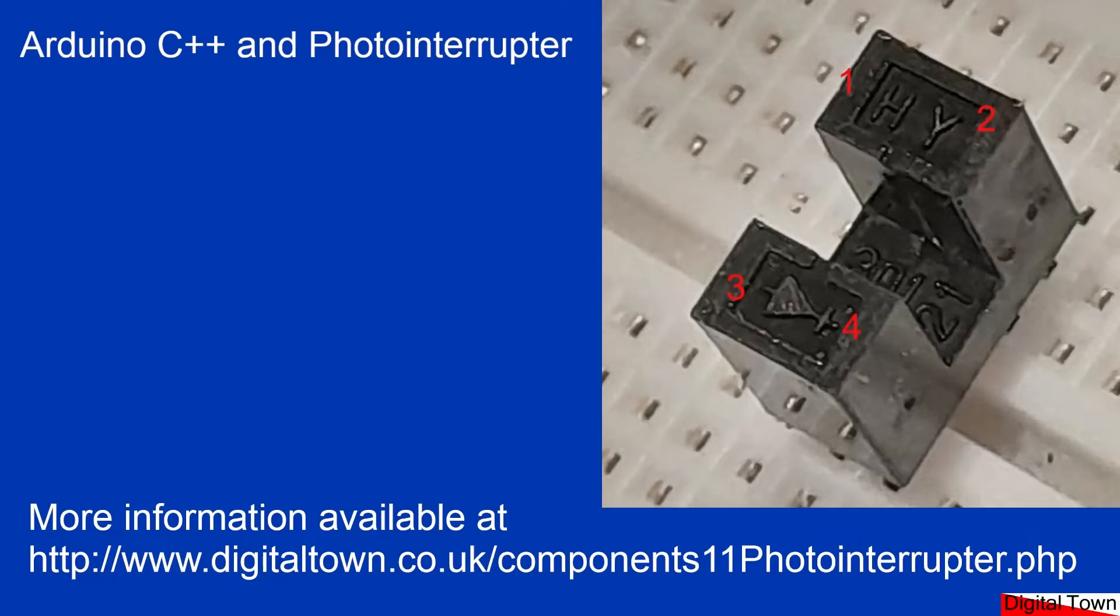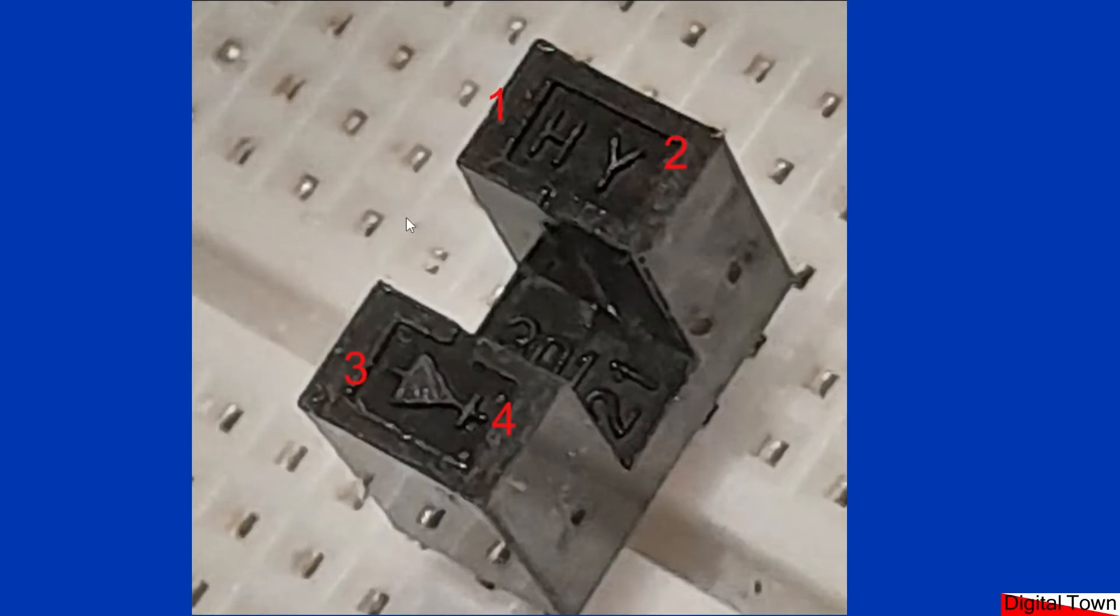To make it easier in the tutorial I've put numbers on. These photo interrupters come in lots of different sizes and shapes with different gaps in the center, but to make it easy I've numbered the pins with my own numbering system and I'll explain the wiring as we go along. Basically the way this thing works is on this side you've got an infrared LED and it passes a light beam through a slot.